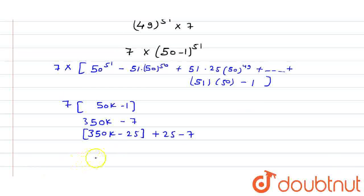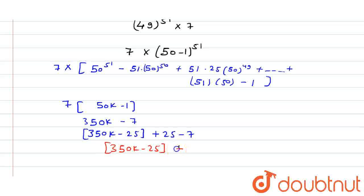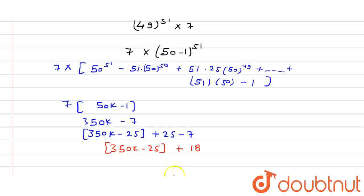The remainder will be: after subtracting, the first part is completely divisible by 25, and 18 is the remainder when the expression is divided by 25. Hence, when 7 raised to the power 103 is divided by 25, the remainder is 18.